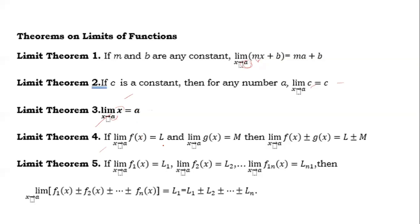Theorem four: if the limit of f(x) as x approaches a is equal to L, and the limit of g(x) as x approaches a is equal to M, then you may add or subtract the two functions. The limit of f(x) plus or minus g(x) as x approaches a is equal to L plus or minus M. This is the addition and subtraction rule for limits.